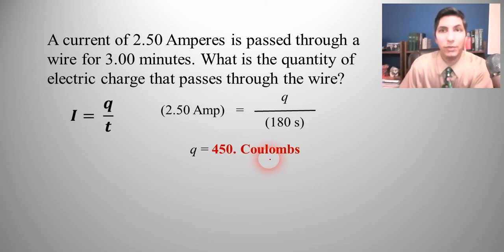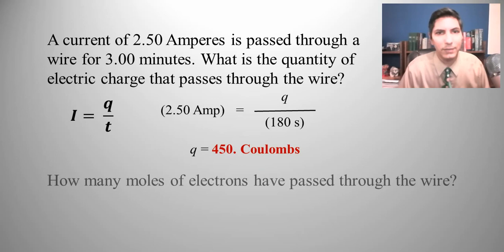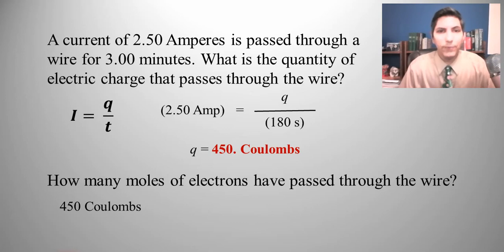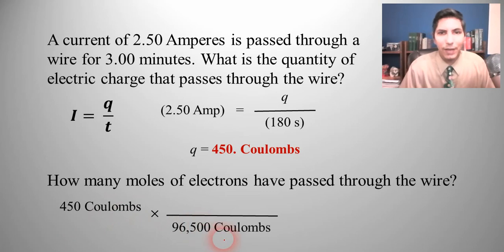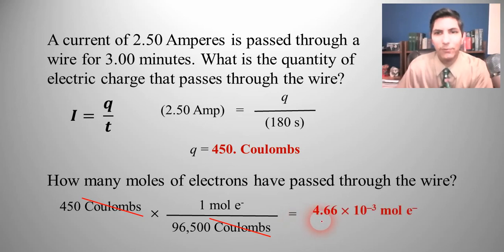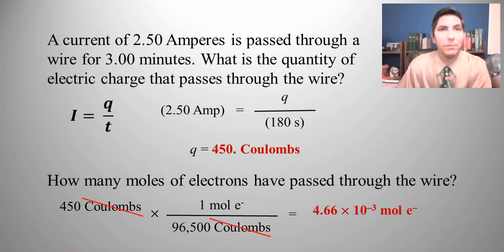Now, what if we want to find out how many moles of electrons have passed through that wire? It's a simple conversion from coulombs to moles of electrons using Faraday's constant. We put 96,500 coulombs on the bottom and one mole of electrons on top. Coulombs cancel, and we find it's about 4.66 times 10 to the negative third moles of electrons.